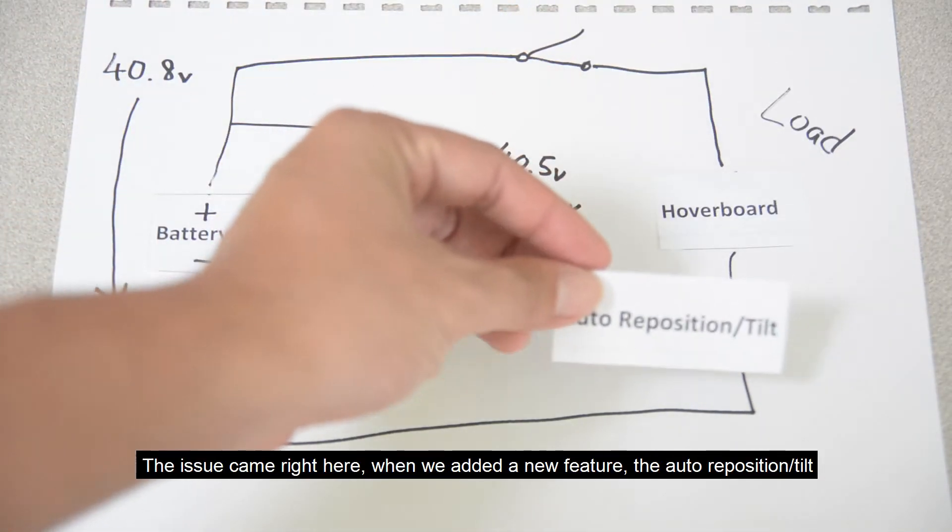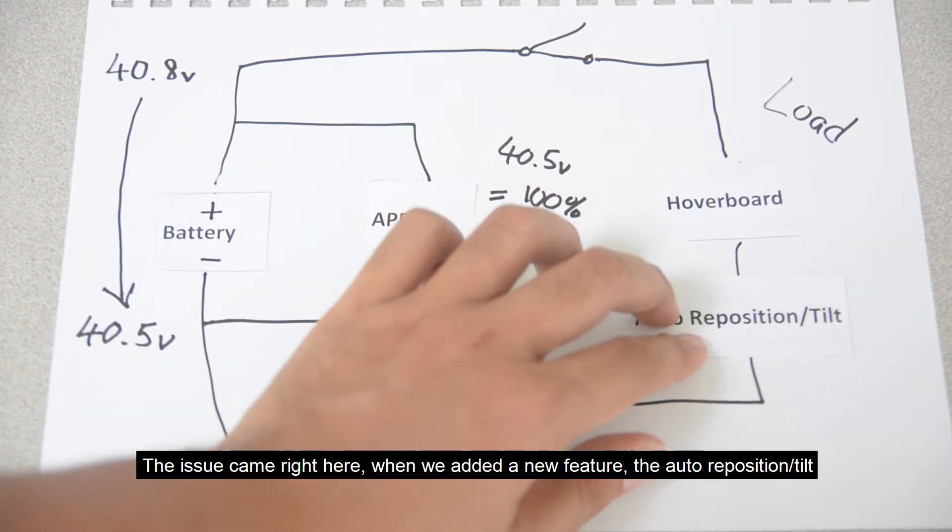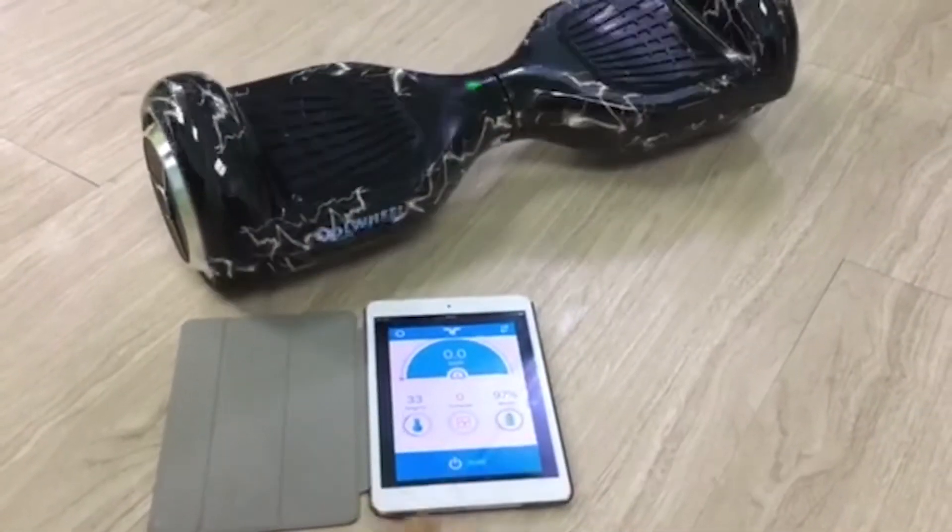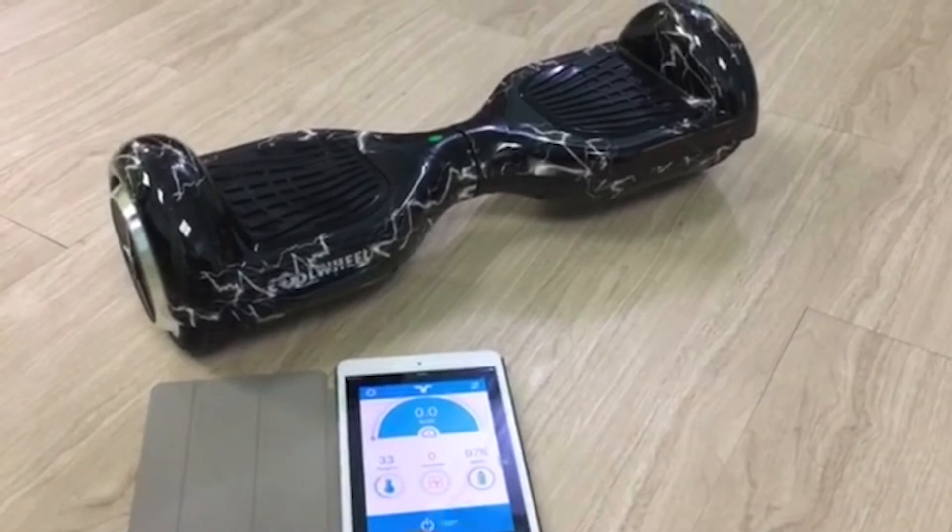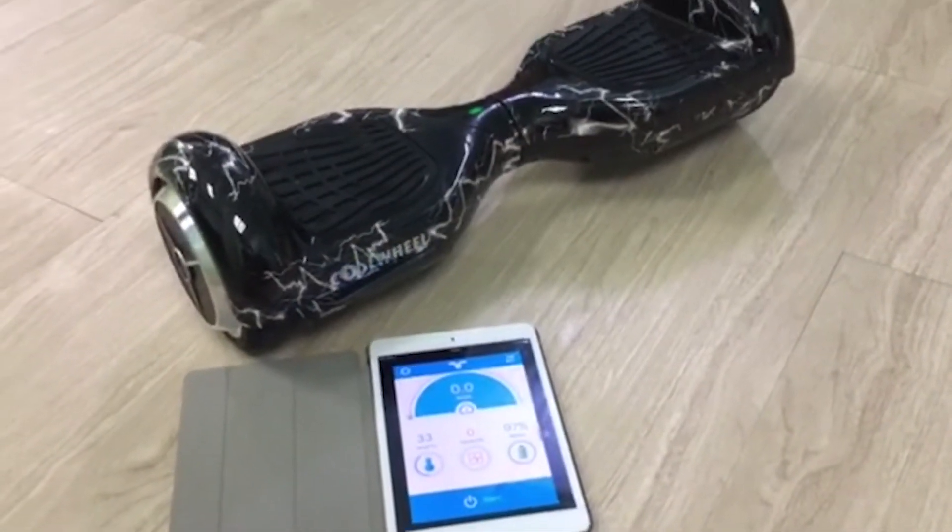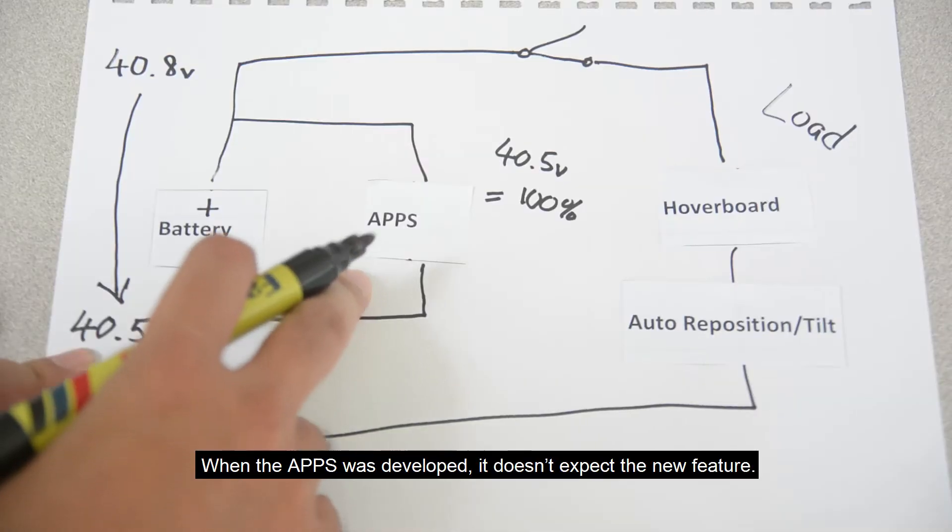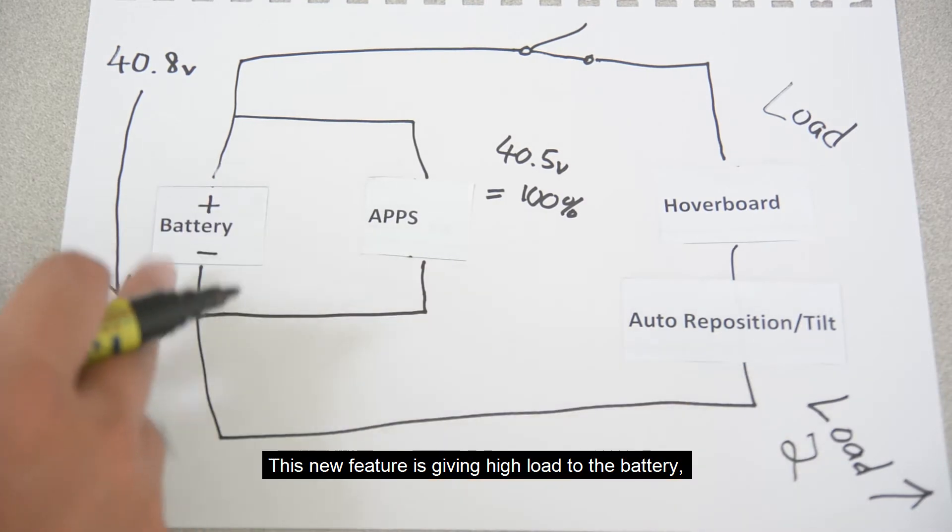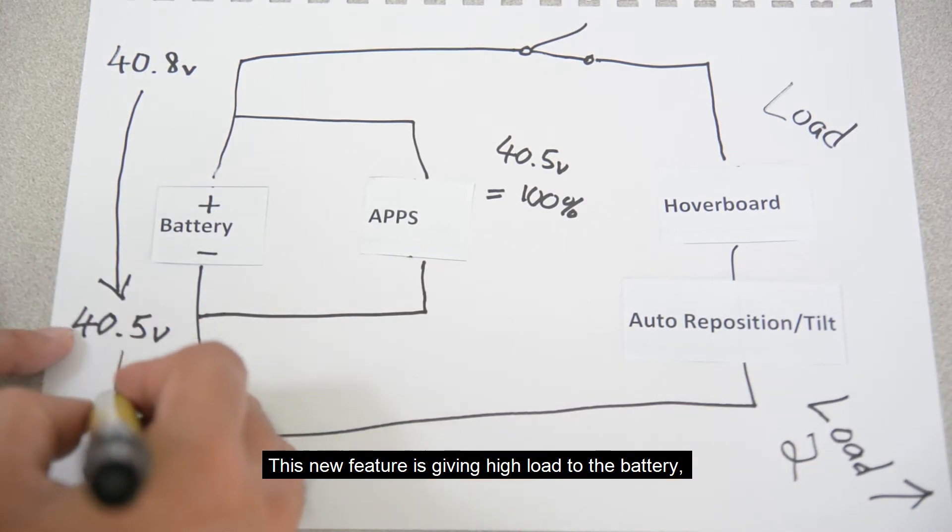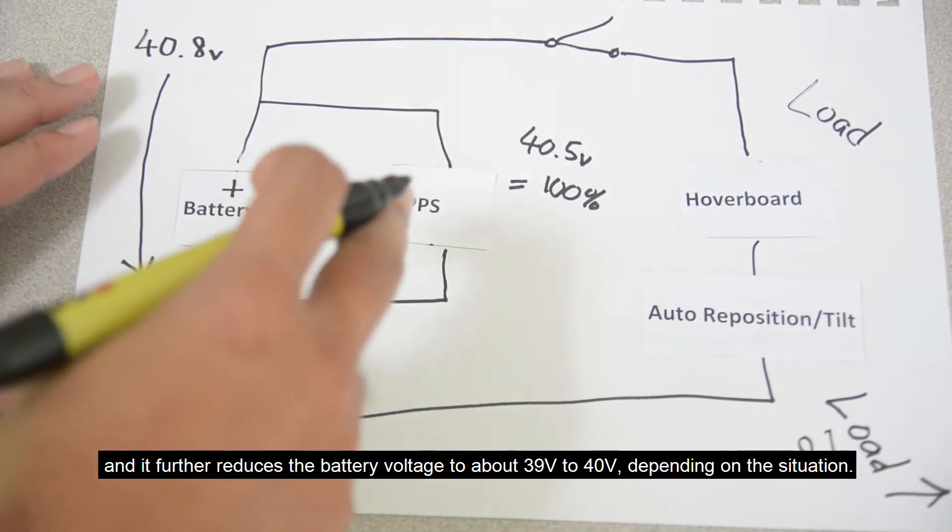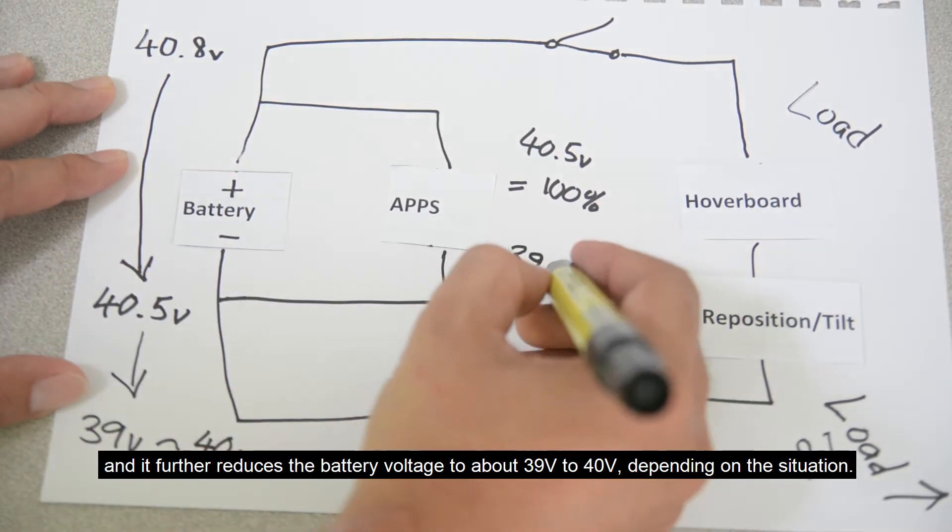The issue came right here when we added a new feature, the auto-reposition or tilt. When the apps was developed, it didn't expect the new feature. This new feature is giving high load to the battery and it further reduced the battery voltage to about 39V to 40V, depending on the situation.